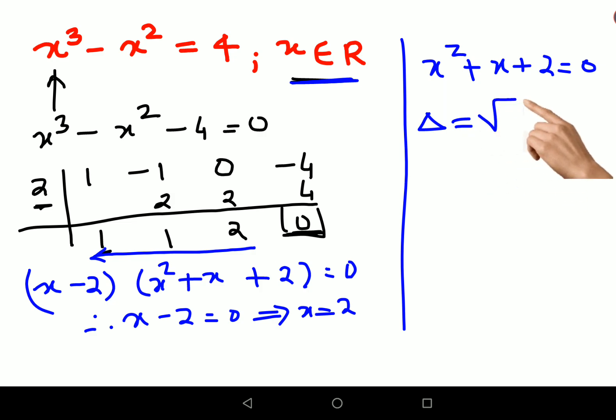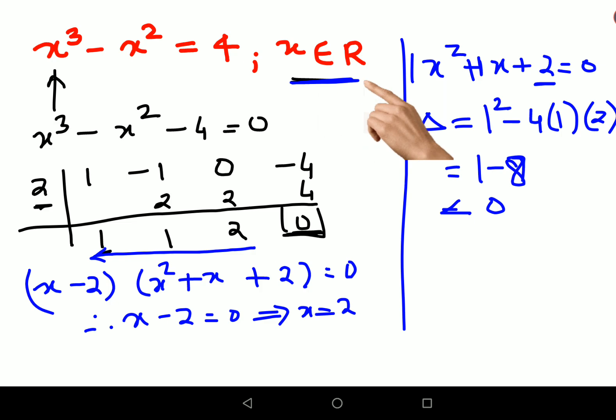The delta is nothing but, you just need to find the value of b²-4ac. So what is b? b is just 1, so 1² minus 4 into a which is again 1, so 1 into c which is 2. So this is coming out to be 1-8, so that is coming out to be less than 0.